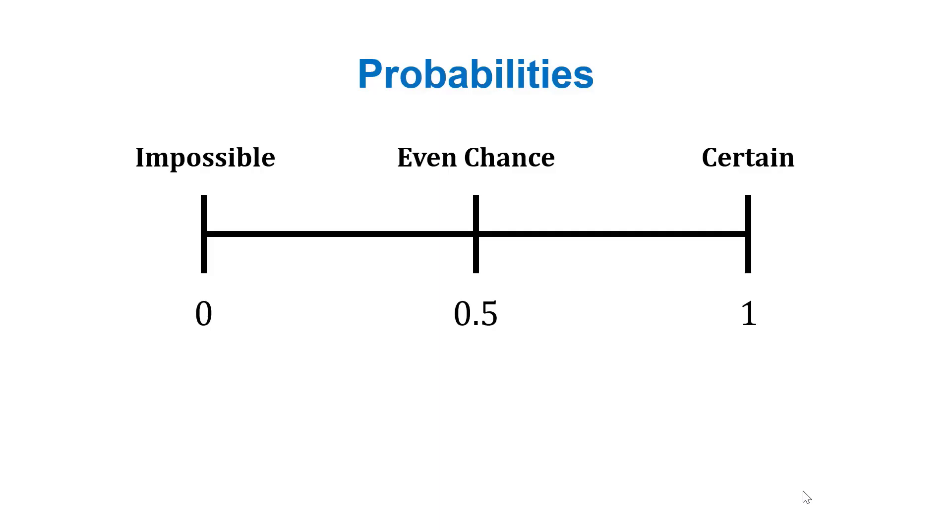Now let's talk about probability values. Probability values run between 0 and 1, with 0 being impossible, 1 being completely certain, and 0.5 being an even chance. You can read these as decimals or as percentages, so 50% is an even chance.